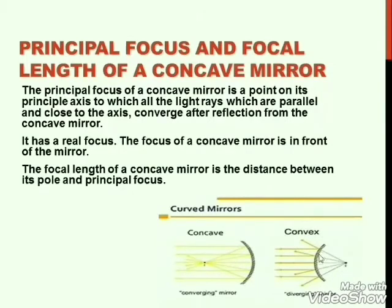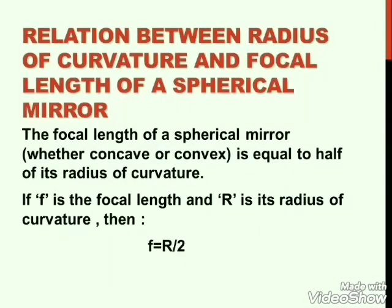The focus is situated behind the mirror. The shaded region depicts the unreflecting surface of the mirror — no reflection takes place there, so that side is the back side of the spherical mirror. Now we are going to study the relation between radius of curvature and focal length. Radius of curvature is the distance between the centre of curvature and pole. Focal length is the distance between principal focus and pole.